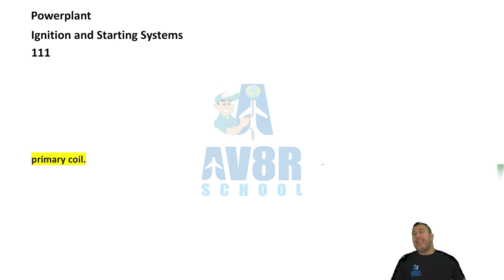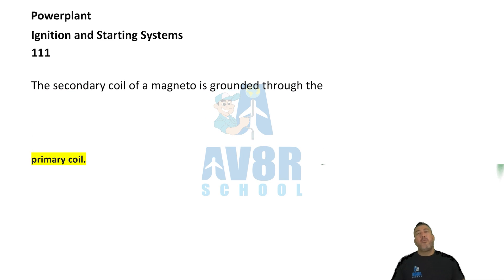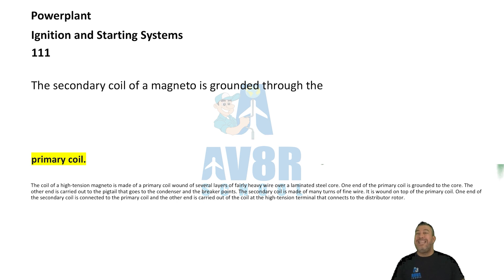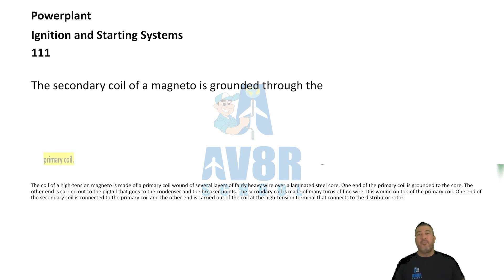Number 111. The secondary coil of a magneto is grounded through the primary coil.